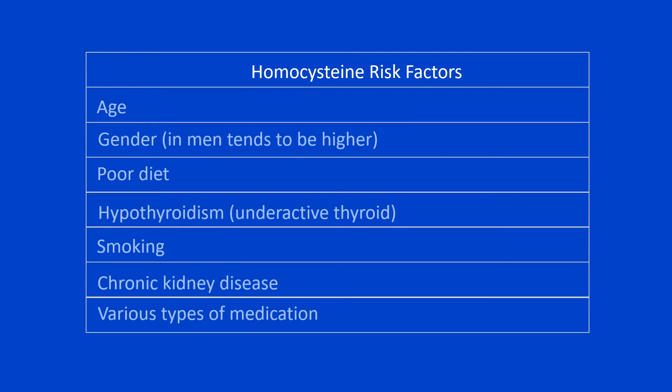There are various factors which can increase blood level of homocysteine, including age, gender (in men tends to be higher), poor diet, hypothyroidism (which is underactive thyroid), smoking, chronic kidney disease, and various types of medication.